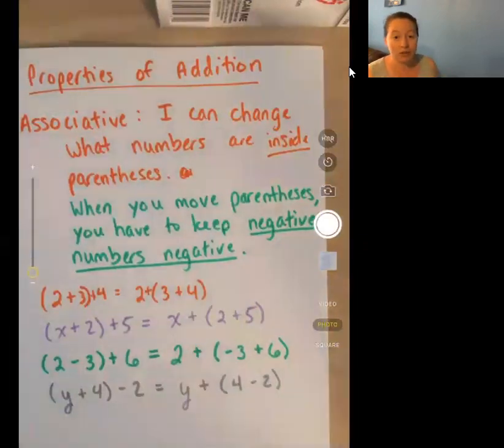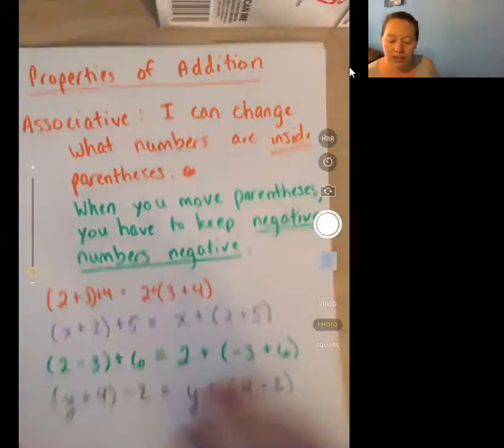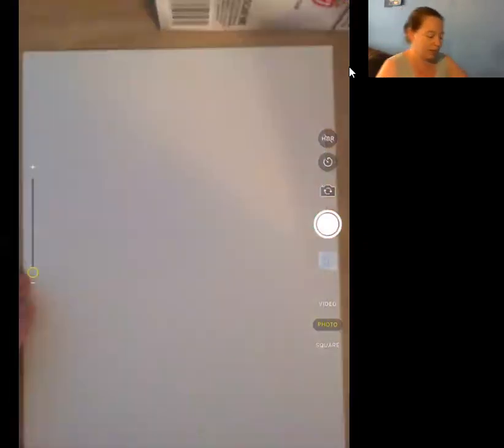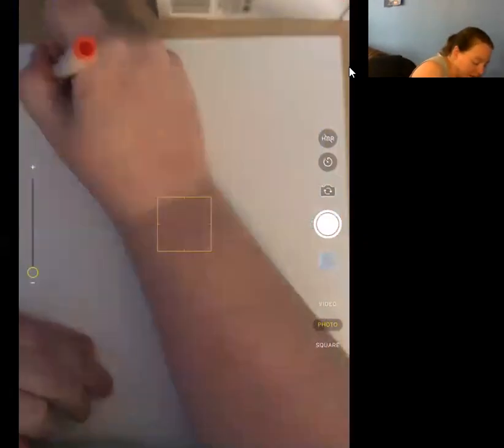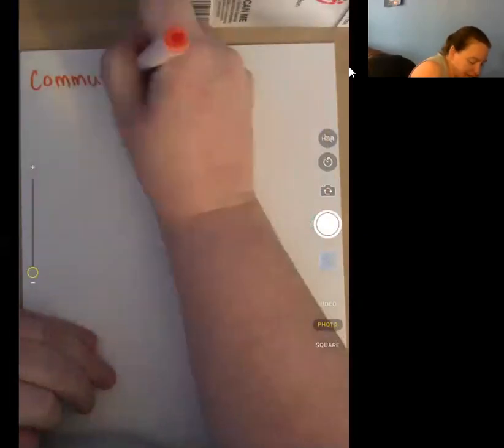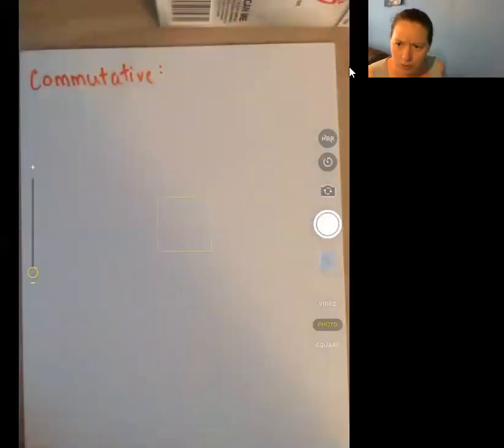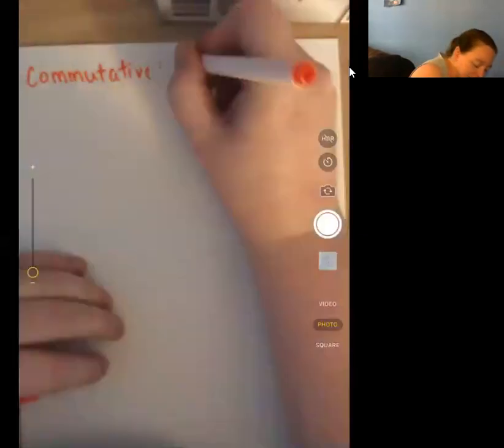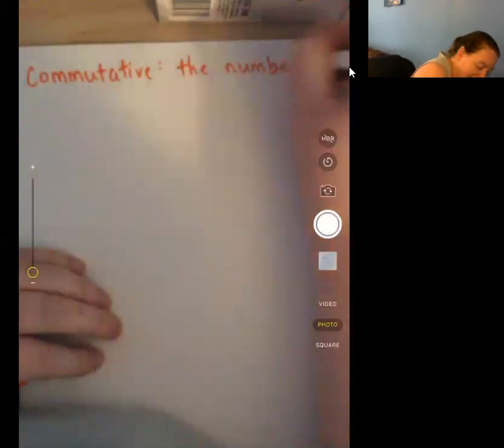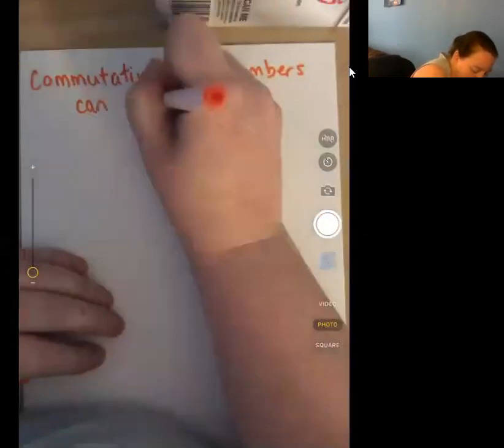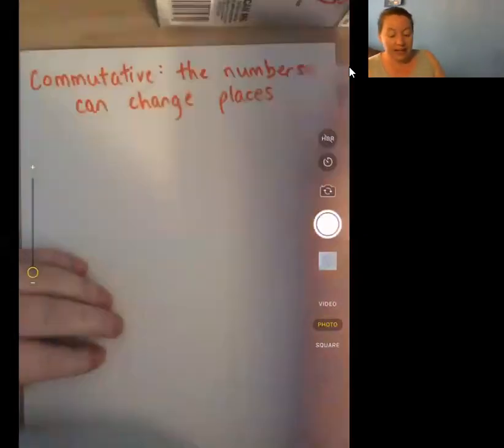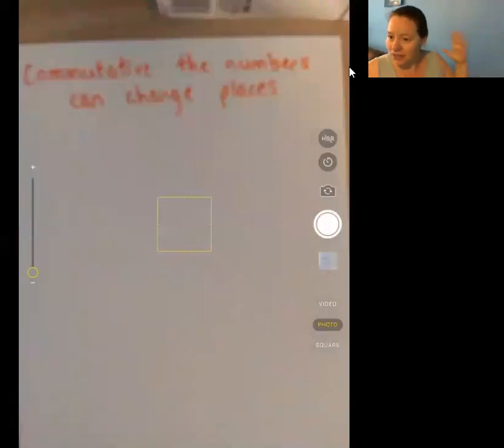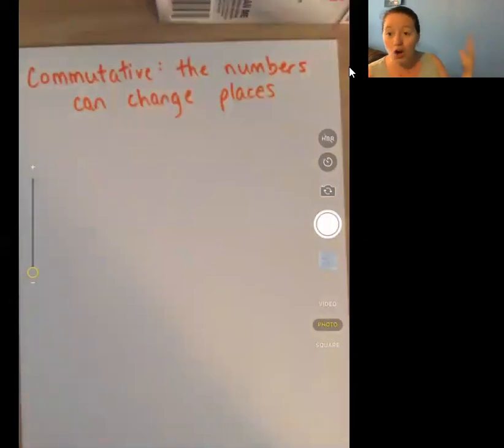Now let's talk about the commutative property. So we commute. Lots of your parents commute. That means to go from one place to another. They drive there in the morning and then they come back in the afternoon. Going into St. LaSalle and then driving back home can be considered a commute. So our commutative property means the numbers can change places. Now sounds really straightforward.